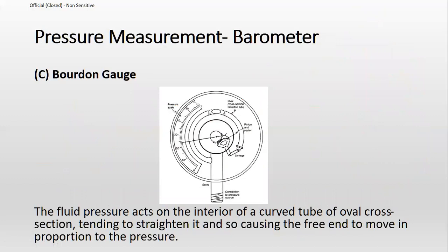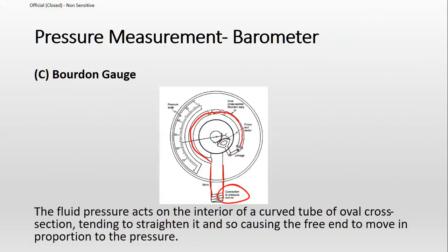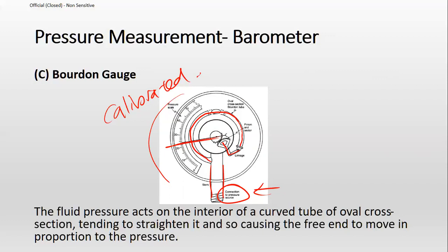Another device is the Bourdon gauge. The concept is simple: a stem connected to your pressure source is connected to a Bourdon tube, which is then connected to a mechanical linkage that moves a needle. Whatever pressure is exerted causes movement of the Bourdon tube, which causes the linkage to move the needle. The pressure scale must also be calibrated — by looking at the movement, we know the pressure.